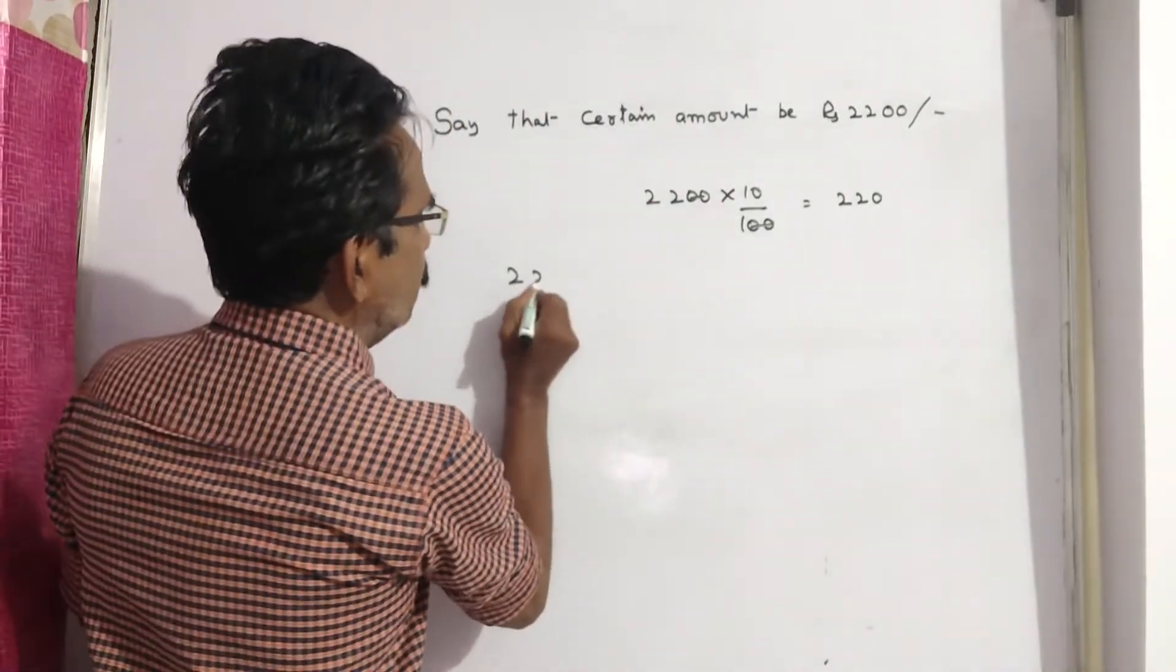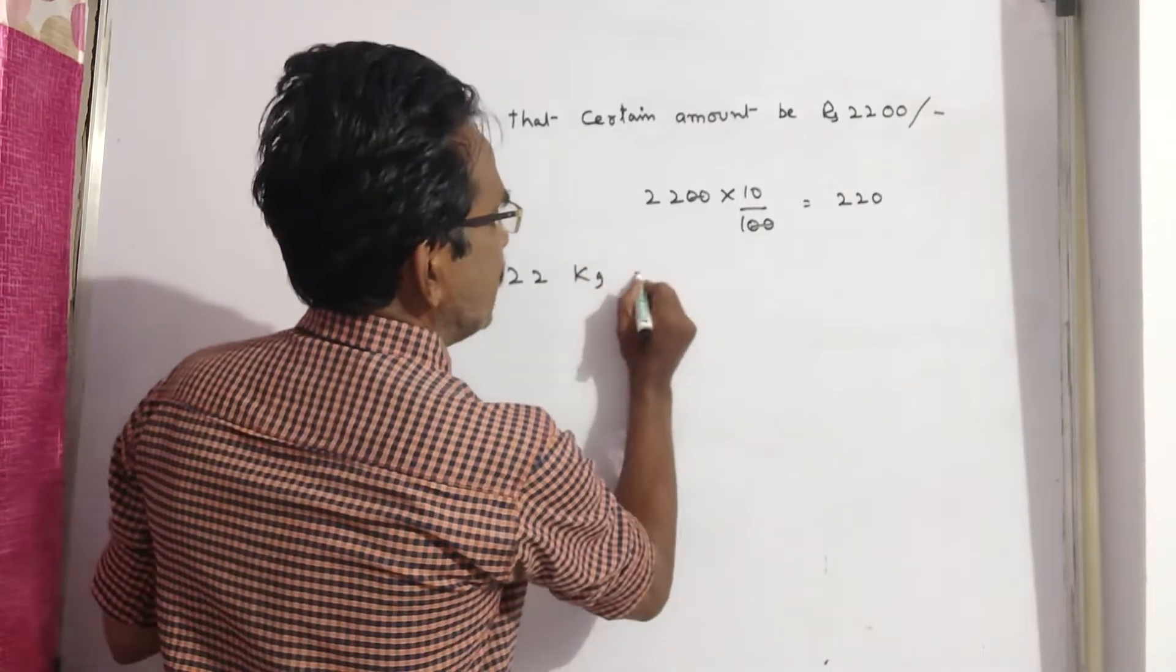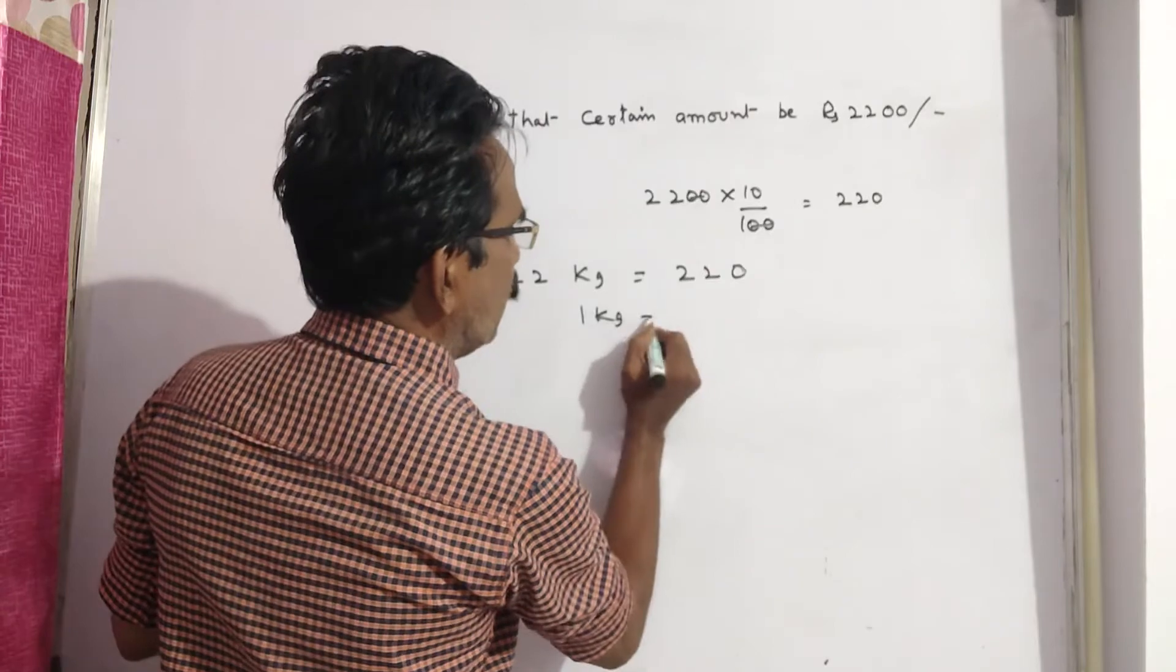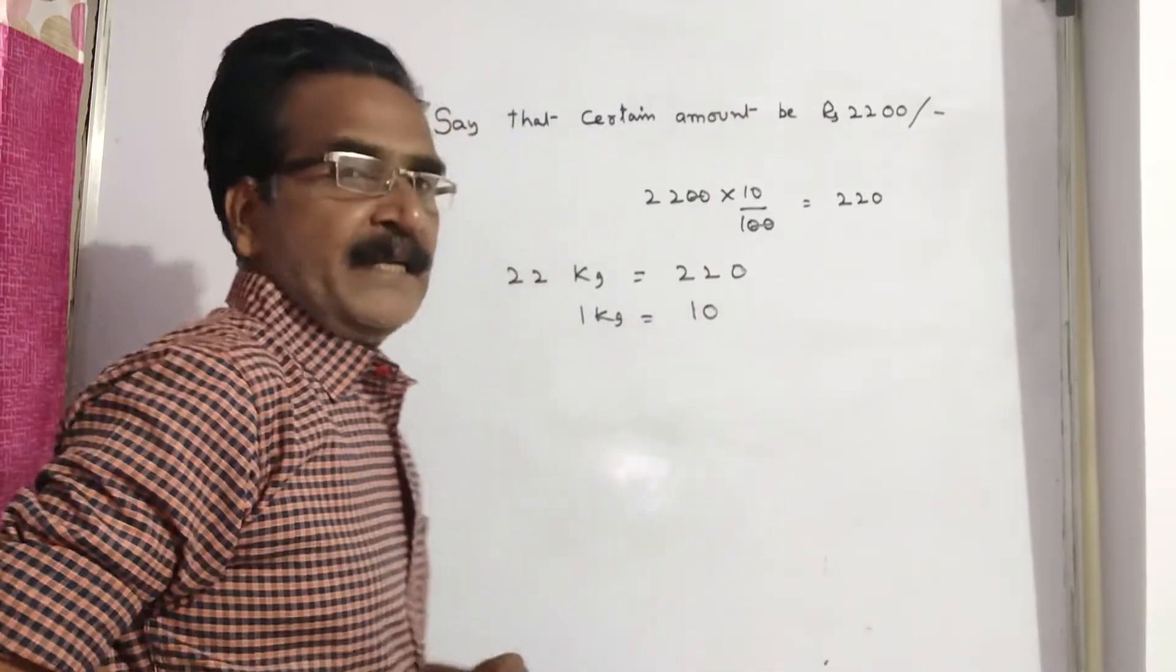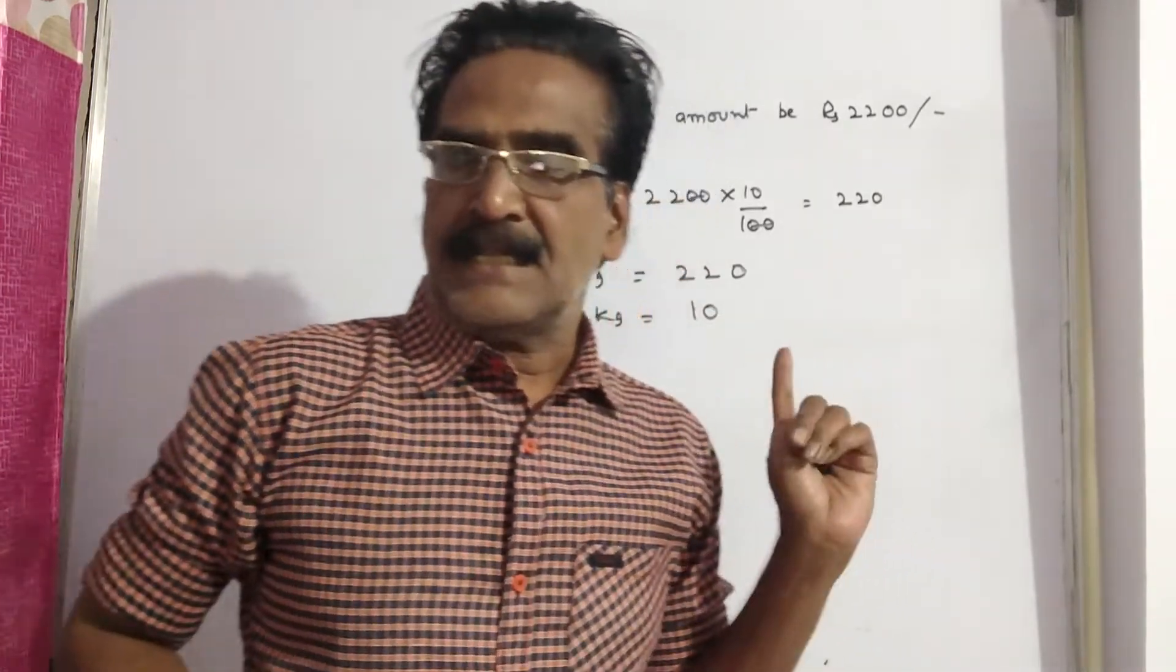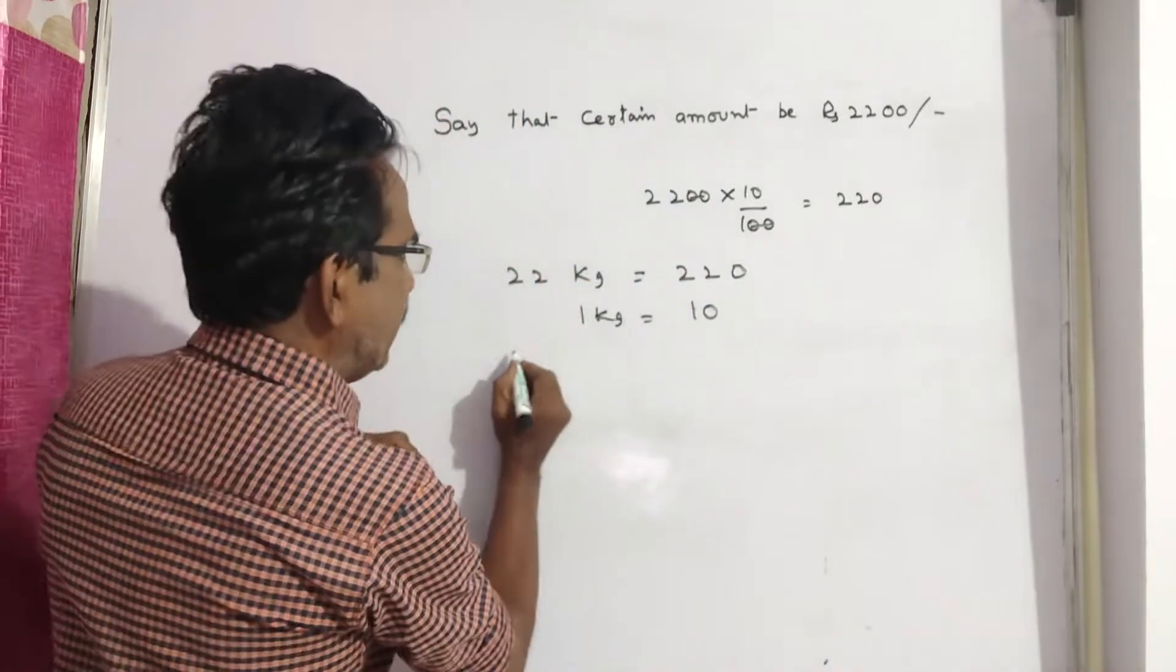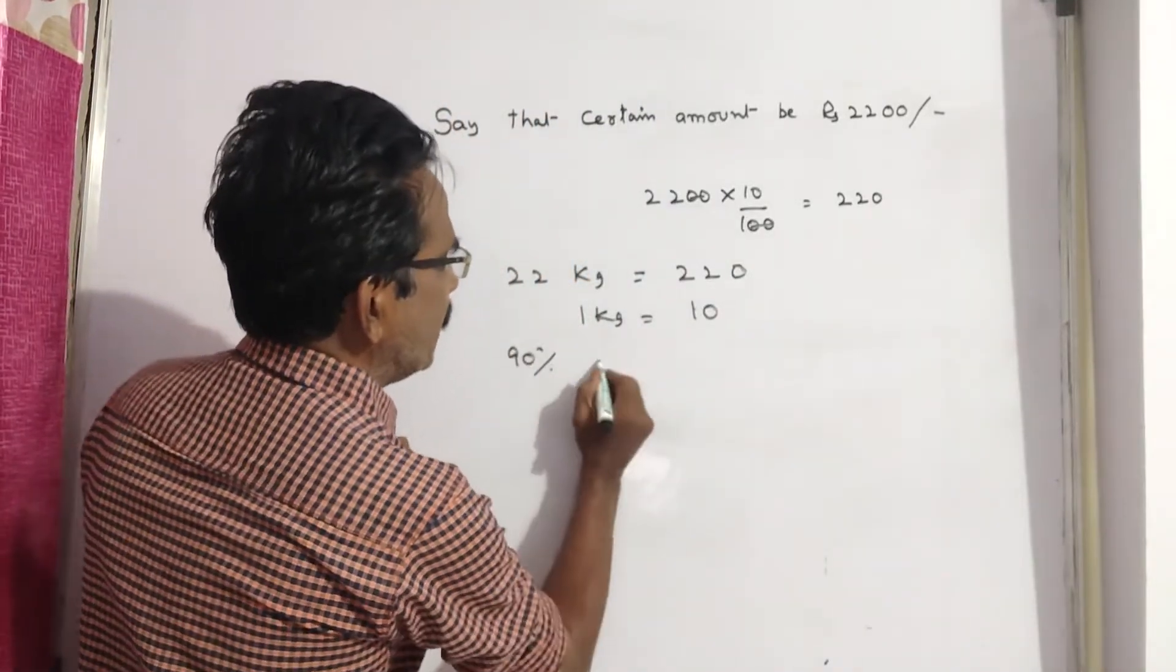So 22 kg sugar price is equal to 220 reduced price. One kg is equal to 10 rupees. So this is the reduced price. That means 90 percent of the original price is equal to 10 rupees.